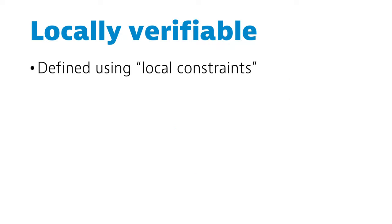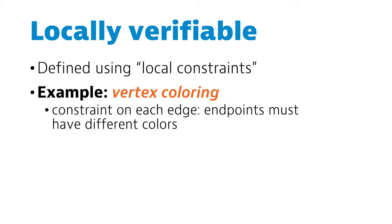Informally, if the problem is defined in terms of local constraints, it is good. For example, graph coloring is such a problem. There is a constraint on each edge, the endpoints must have different colors, and there are no other constraints. If a coloring looks good in all local neighborhoods, then it is indeed a valid solution.